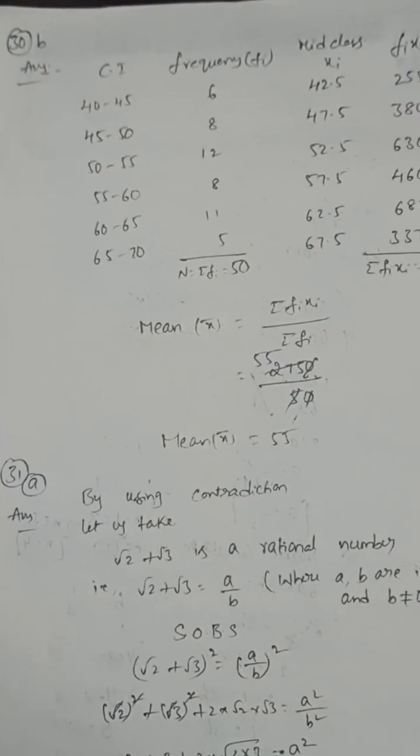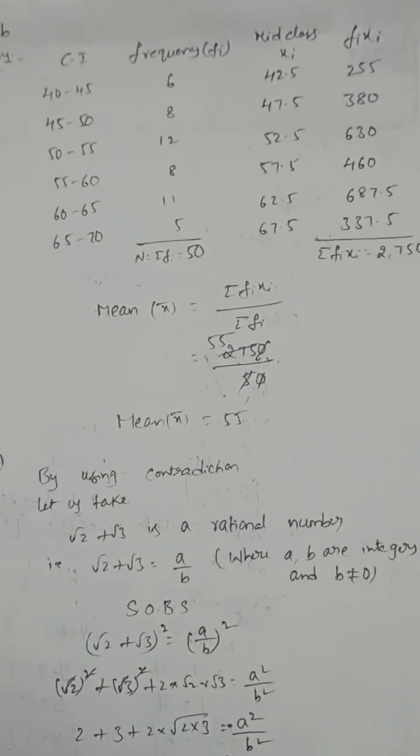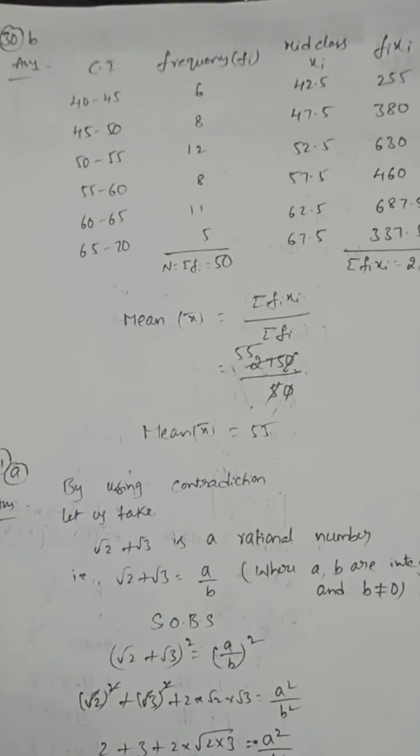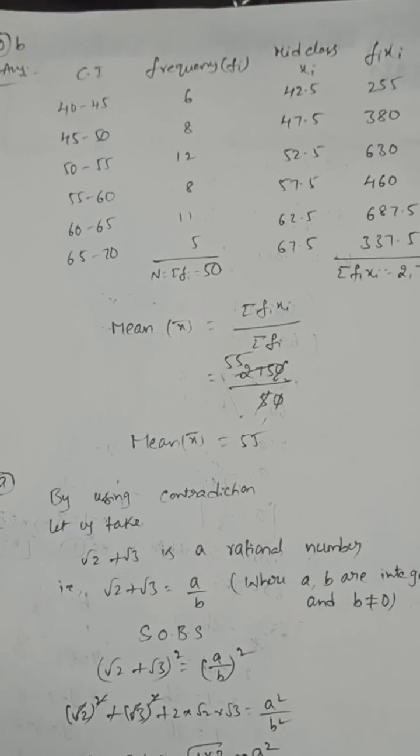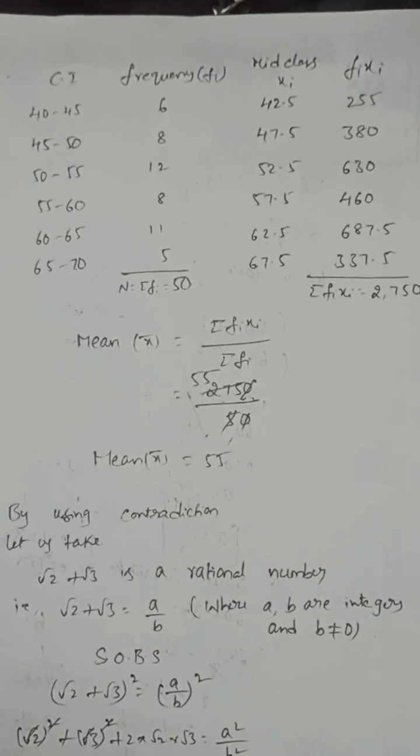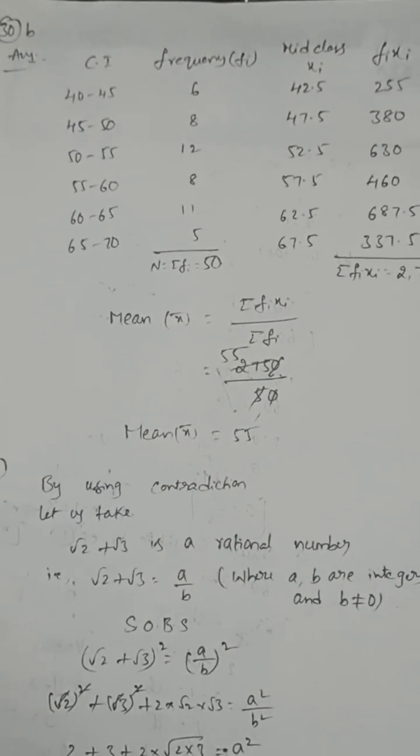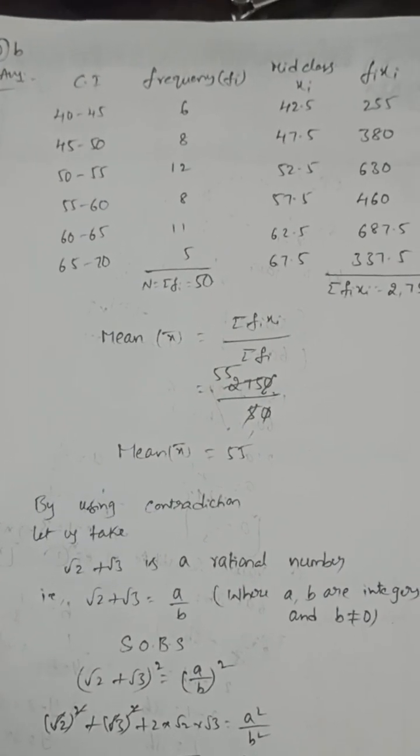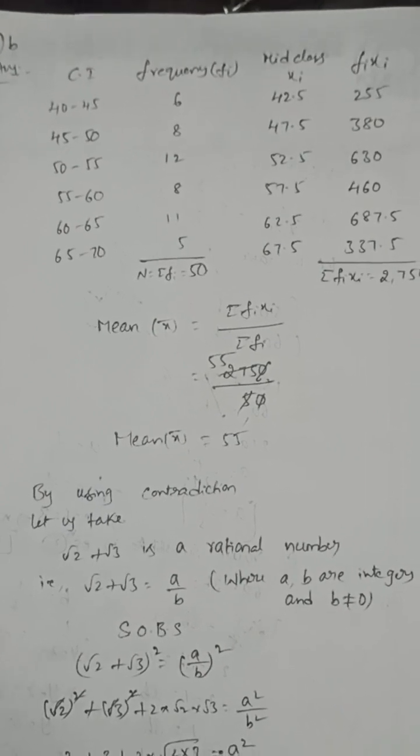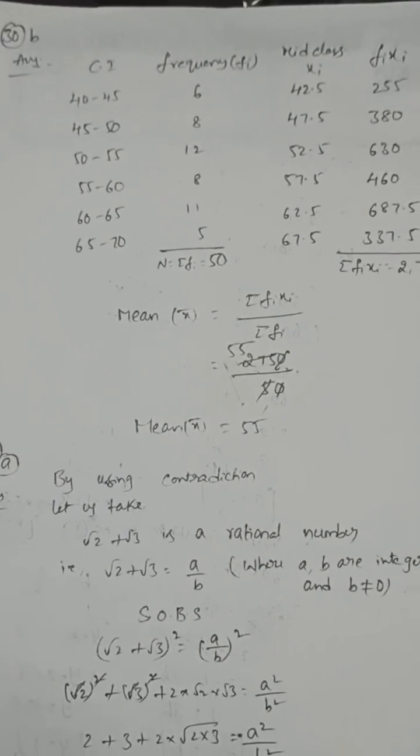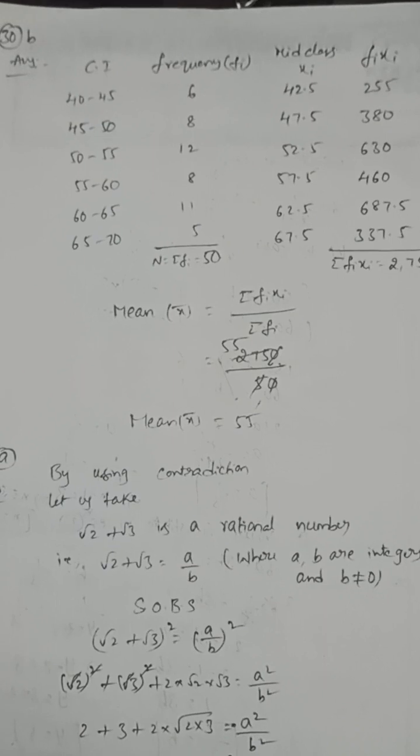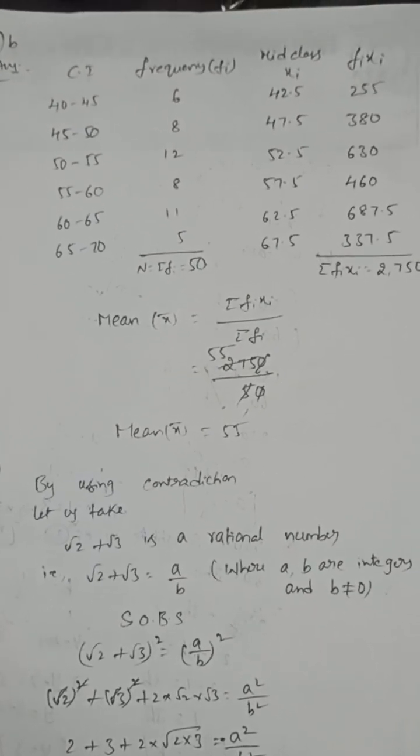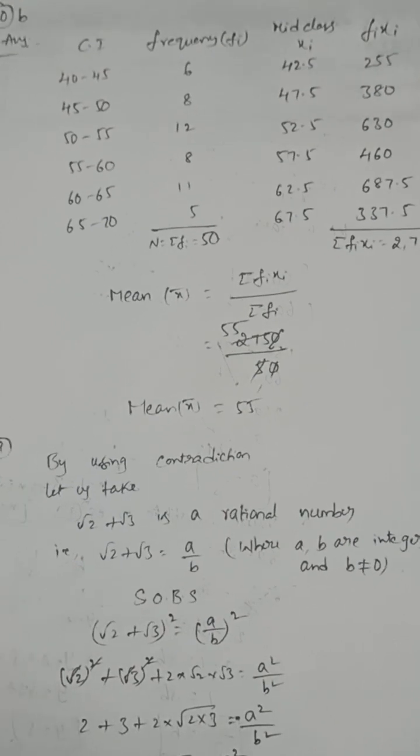Find the mean of the given data by using direct method: mean = (ΣfᵢXᵢ)/(Σfᵢ). Before finding mean, first find the mid value, which is the average of upper limit and lower limit. First class interval mid value is 42.5, 47.5, 52.5, 57.5, 62.5, 67.5. Mean formula is (ΣfᵢXᵢ)/(Σfᵢ). Σfᵢ is 50, ΣfᵢXᵢ is 2750. So mean is 55.